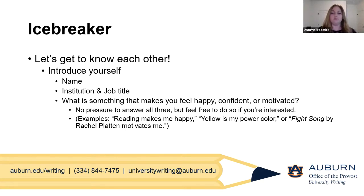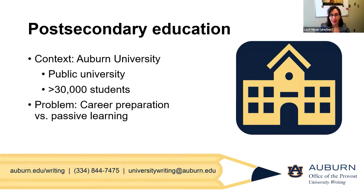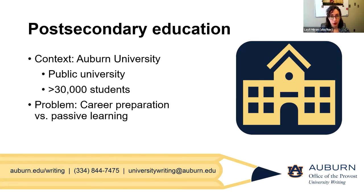It is great to get to know all of you. I'm going to turn it over to Lely to learn about our conceptual framework. So as Autumn said, I'm going to be presenting briefly on our conceptual framework. We first wanted to talk about the context we're coming from — later we'll open up the floor to discussion. The three of us presenting today work for University Writing at Auburn University. Auburn is a large public institution in the state of Alabama with more than 30,000 undergraduate and graduate students.